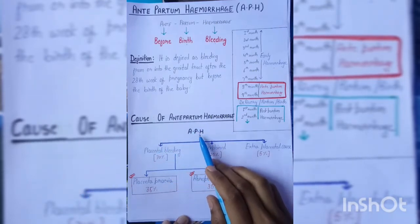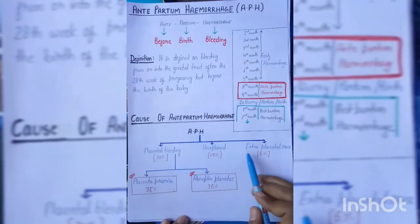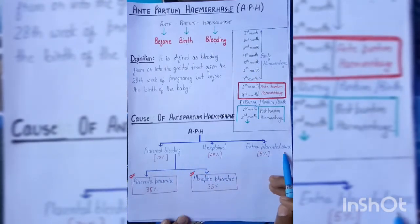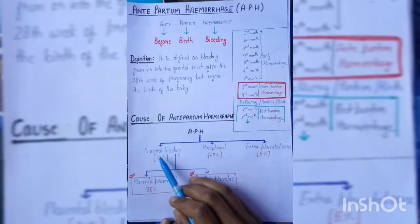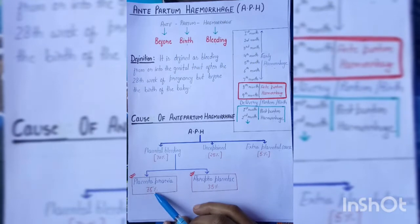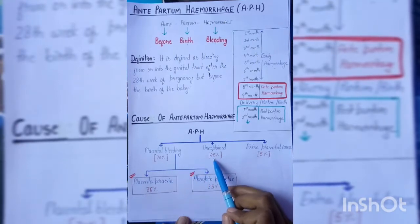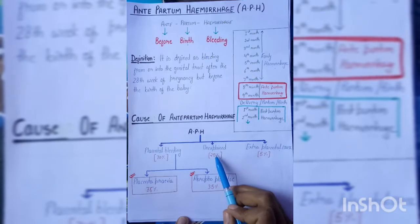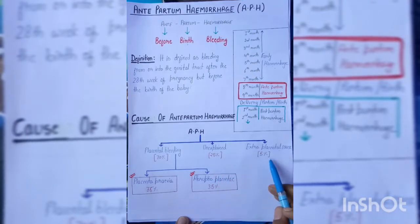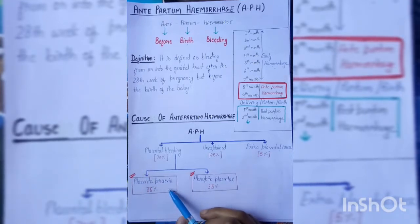The causes of antepartum hemorrhage are divided into three categories: placental bleeding, extra-placental bleeding, and unexplained. Placental bleeding is divided into placenta previa and abruptio placenta, each accounting for 35%. Unexplained accounts for 25% and extra-placental for 5%. Today we will discuss placenta previa and abruptio placenta in detail.